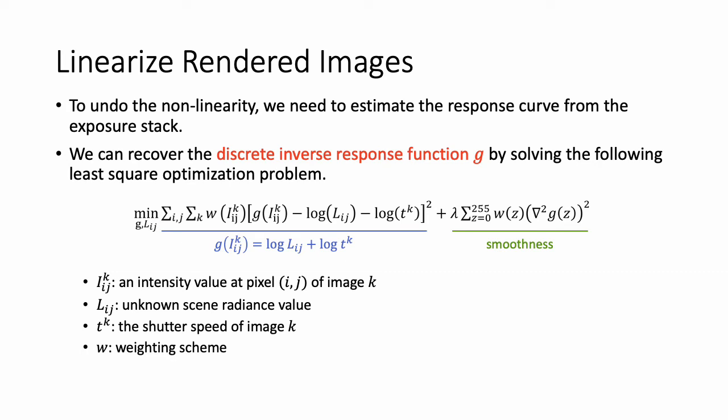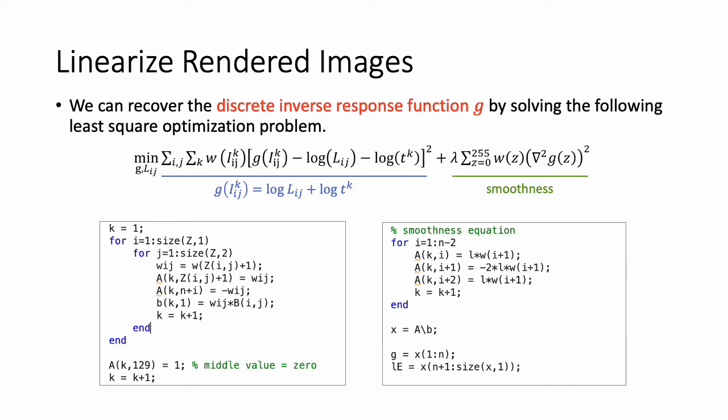We can recover the discrete inverse response function G by solving the following least-square optimization problem. See this objective function. The objective function consists of two terms. The left term encourages to satisfy the equation between the pixel intensity, the scene radiance, and the shutter speed. The right term makes the response curve more smooth. This is the MATLAB code to solve this problem. By solving this matrix problem, we obtain the G values with input pixels 0 to 255. Then, 8-bit LDR images can be linearized.